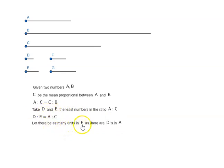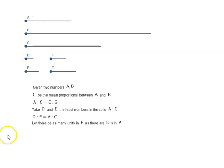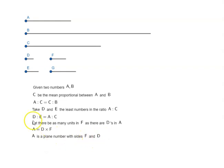Let there be as many units in F as there are D's in A. In modern terminology, it would be A divided by D, which means A is equal to D times F. This means A is a plane number with sides F and D. So we have shown A is a plane number.